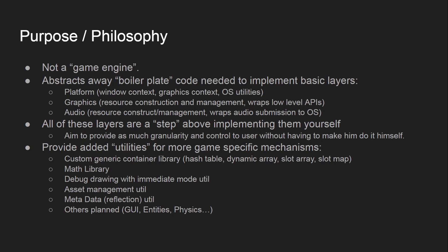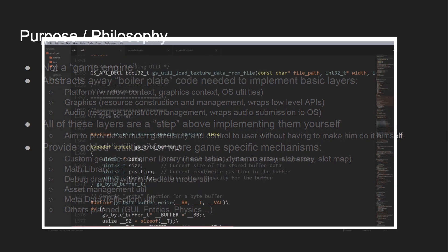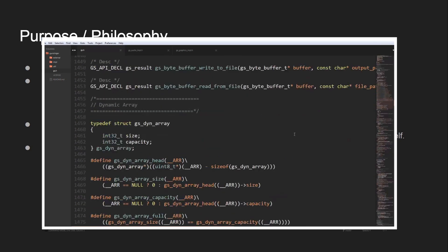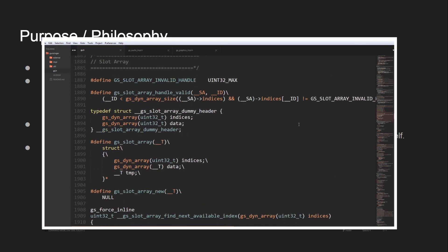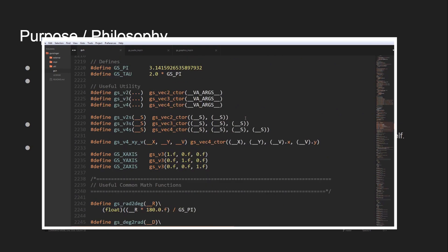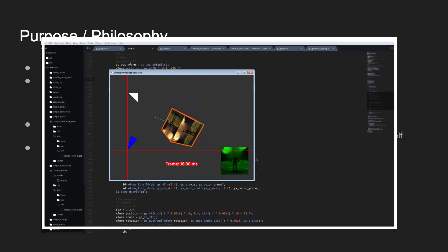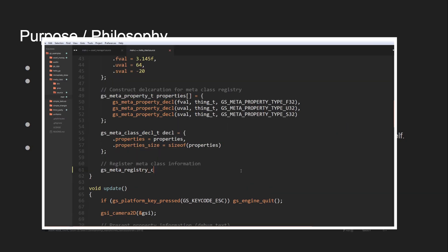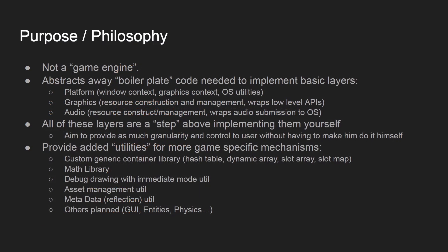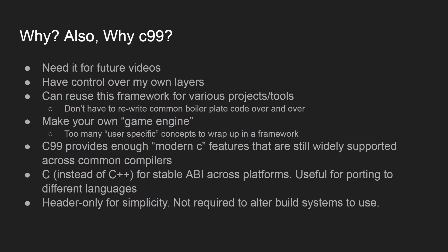Gunslinger also provides utilities for game-specific mechanisms, including a custom generic container library with things like hash tables, dynamic arrays, slot arrays, and slot maps. It has its own custom math library, and utilities that sit on top of the core framework that can be added optionally — things like debug drawing with immediate mode utilities, an asset management utility, a metadata or reflection utility. Others are planned for the future, such as GUI, entity component systems, and physics.